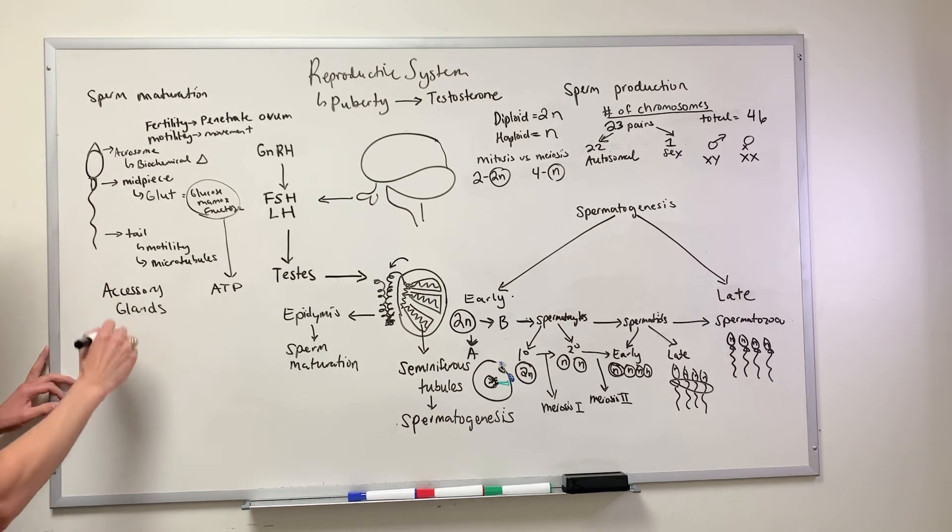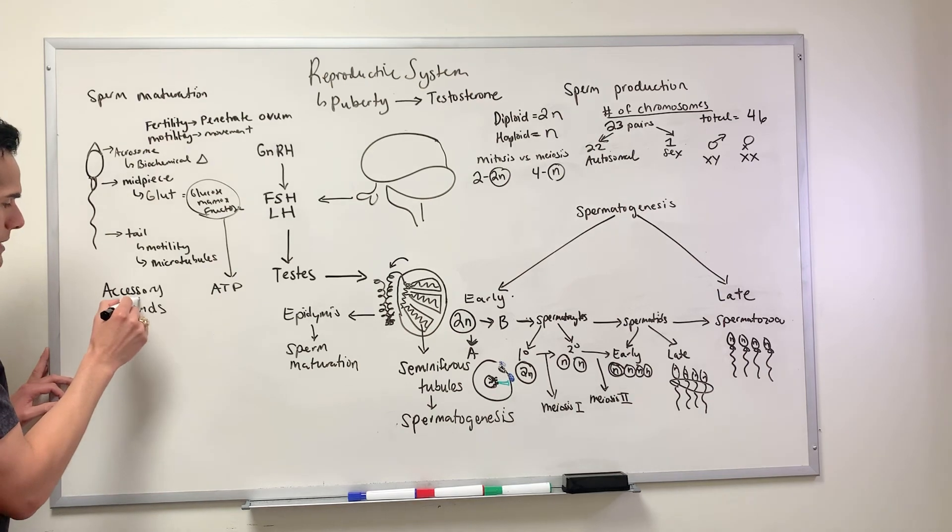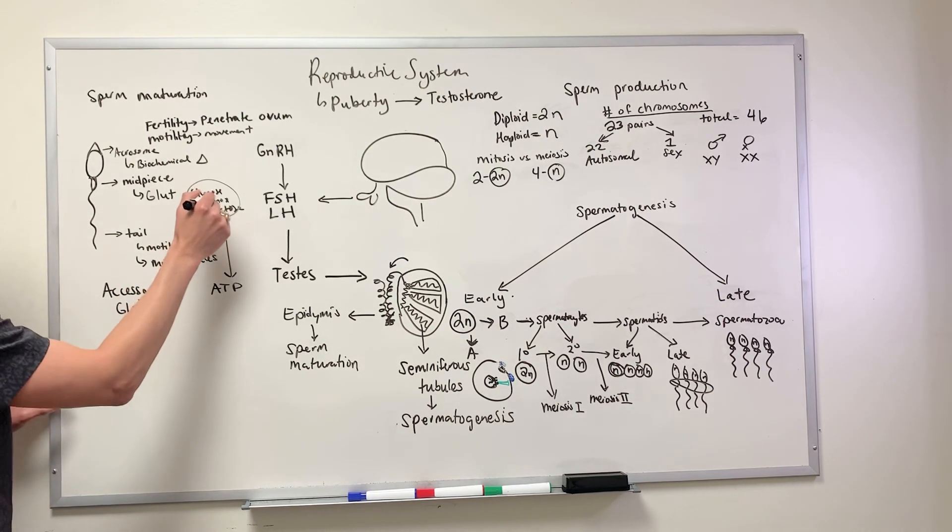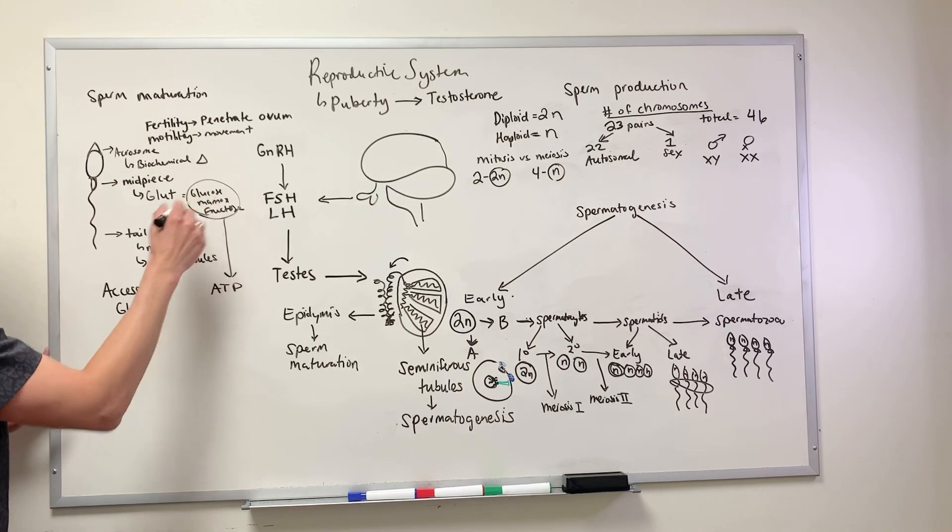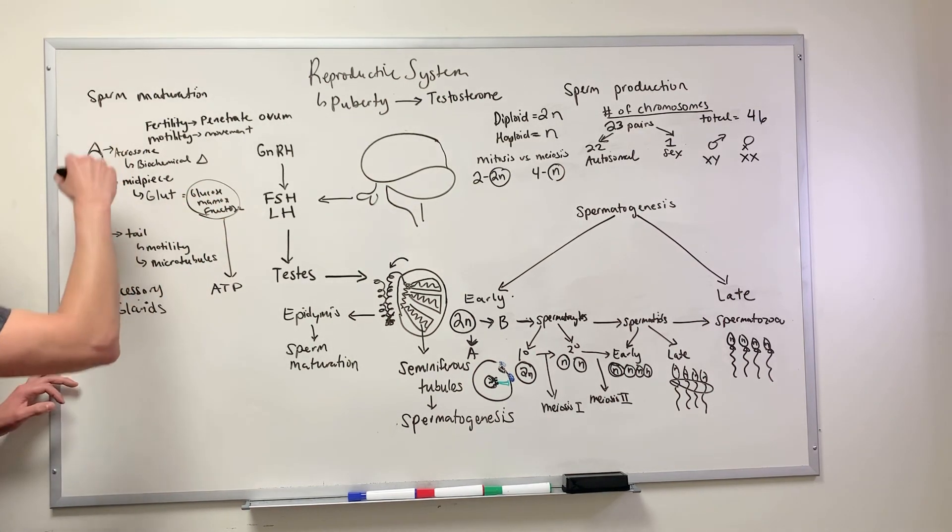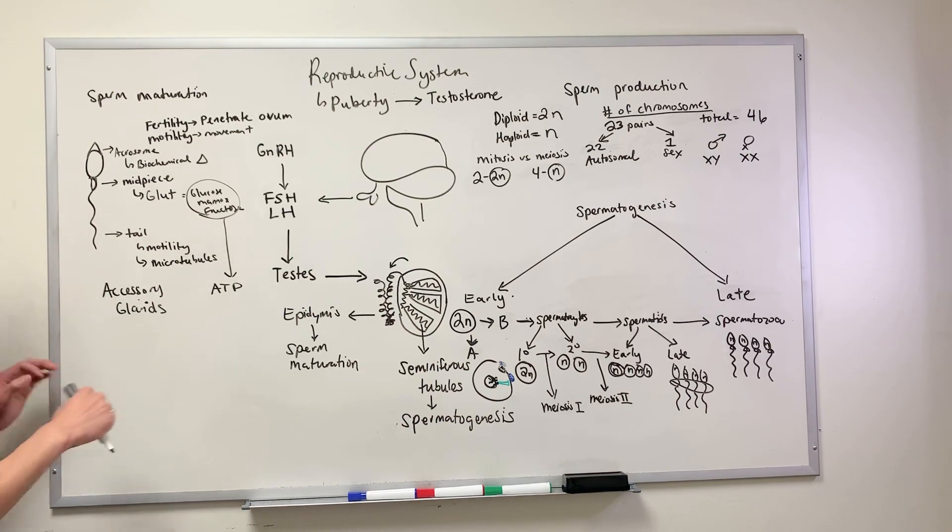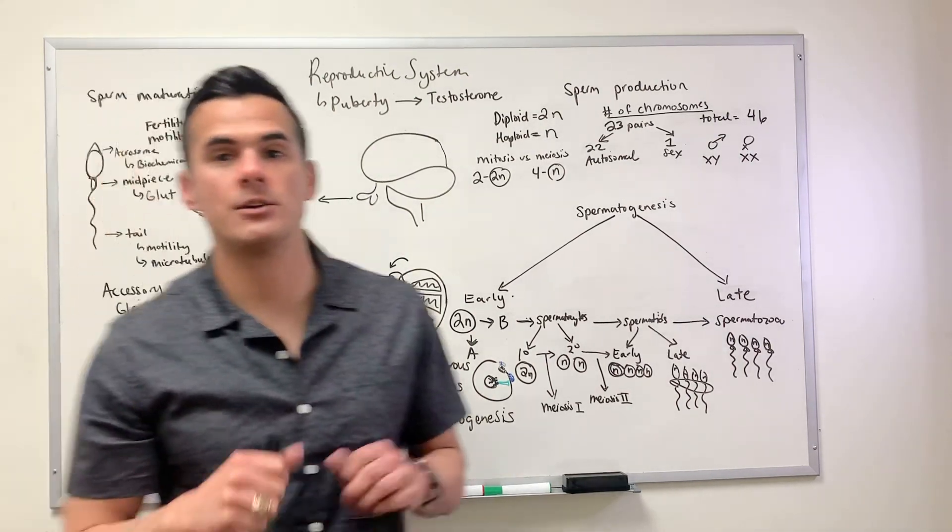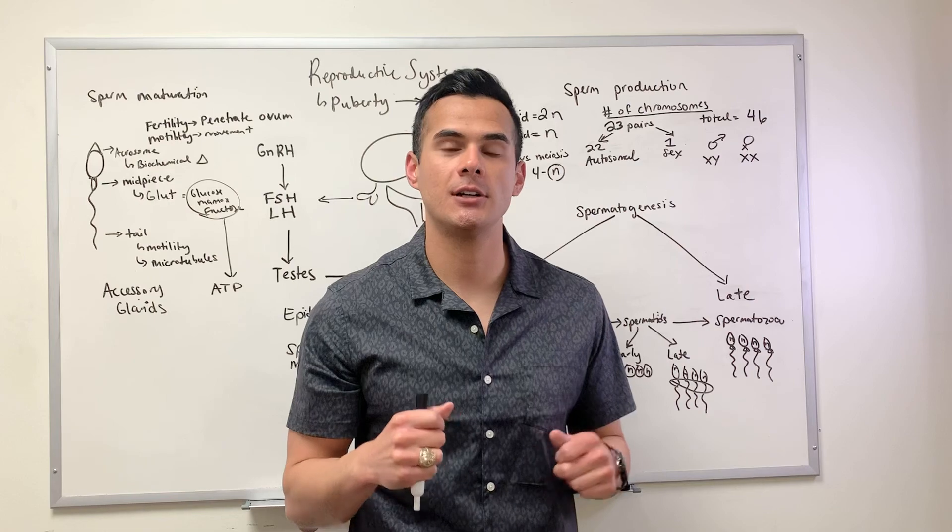The accessory glands for the male, these accessory glands, that's where the glucose, mannose, and fructose is going to be found so that the sperm can use that in order to move its tail.